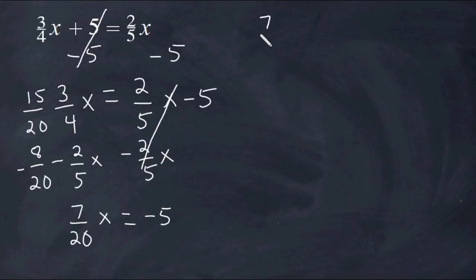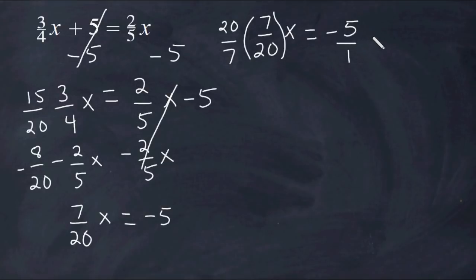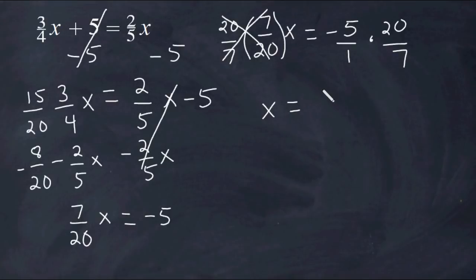Next I'm going to write what we have at the top. 7 twentieths x equals negative 5. To turn any coefficient that is a fraction into positive 1, all one has to do is multiply that fraction by its own reciprocal, which is basically the same thing as dividing it by itself. Because we multiply the left-hand side by 20 over 7, we're going to multiply this value by 20 over 7 as well. Everything on the left-hand side will cancel out, leaving us with x. Now all we have to do is solve negative 5 times 20 over 7.